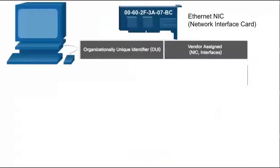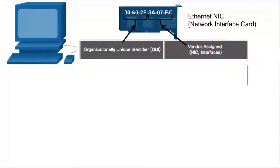An Ethernet MAC address has two parts. The first 24 bits represent the organizationally unique identifier, or OUI. This is the vendor or manufacturer portion of the address. For example, one of several OUI codes associated to Cisco Systems is 00602F. The second 24 bits are assigned by the vendor and are unique to that particular OUI — for example, 3807BC is unique to the vendor code 00602F.